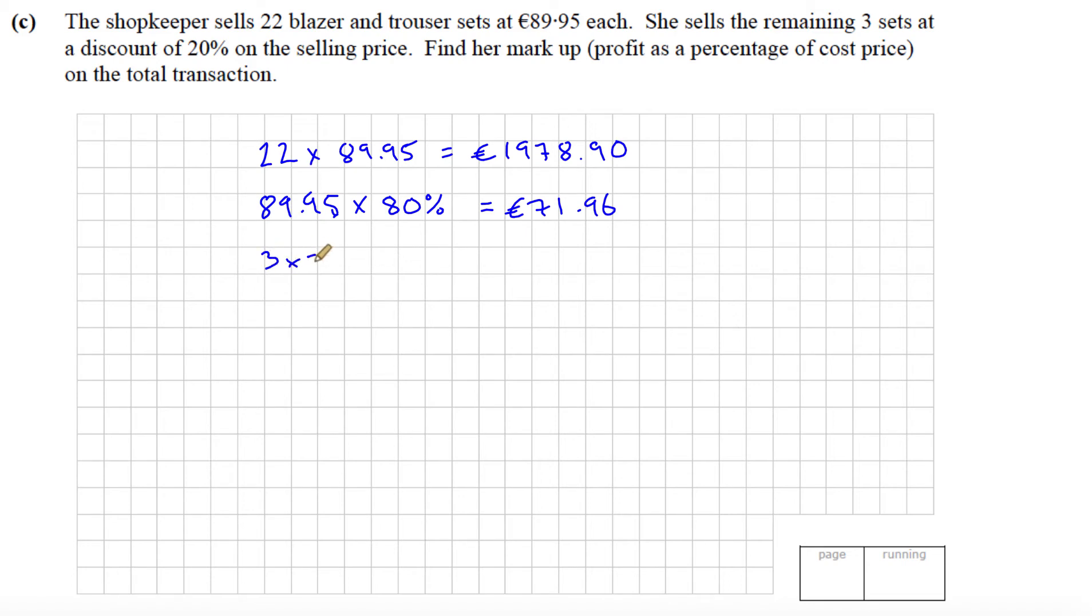Our total would be the addition of this, so if we add 1979.90 plus the three extra pairs at the discount, that gives us a total of 2194.78. That's how much she got when she sold them.